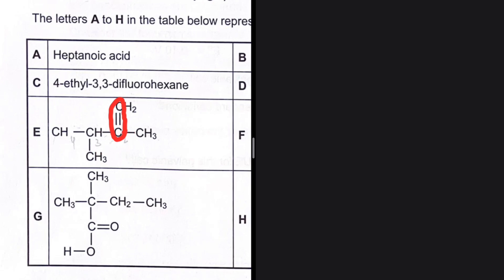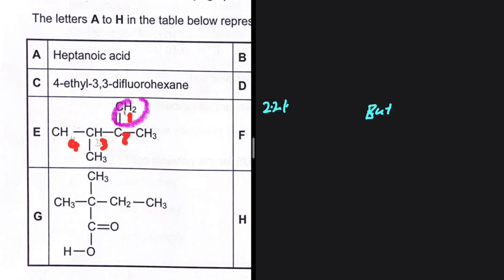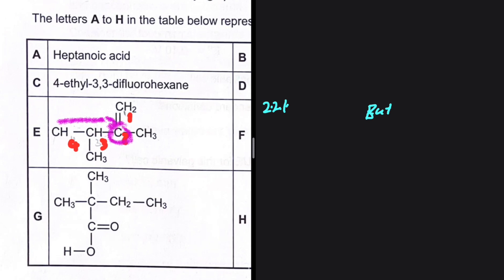So we have four carbons in our longest chain. We need to start numbering from the side closest to the double bond. If we number from this side, we reach the double bond first. If we start numbering from the other side, the double bond would be on the third carbon, which is not what we want.